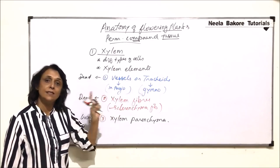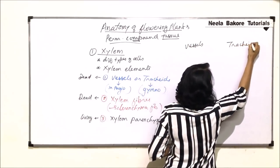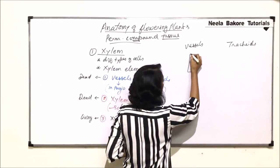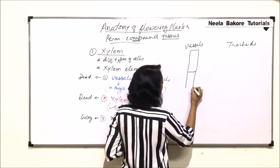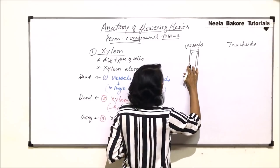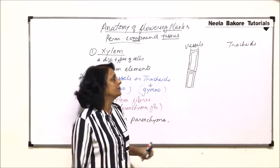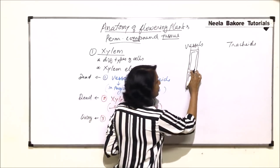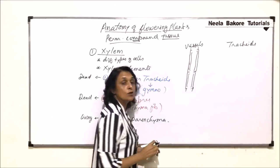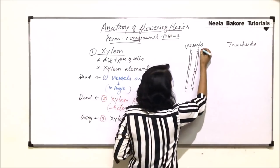Now let us look at the structure of vessels and tracheids. Both are lignified cells but there is a difference in shape. Vessels are long column-like cells placed one over the other. The wall is lignified — there is lignin deposition — and because of this, the inner cytoplasmic content dies and there is a space called the lumen. In vessels, the end wall dissolves, giving us a long narrow capillary tube.